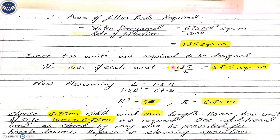Now, using those two values, we are going to design the filter bed. The area of the filter bed required equals water demand divided by rate of filtration, which is 675 × 10³ divided by 5,000, giving 135 square meters. We always design two sets of units so that if one breaks down or is taken for cleaning, the other continues to run without interruption of water supply.